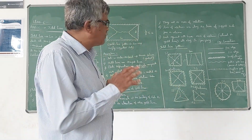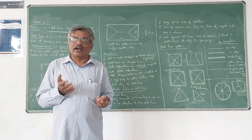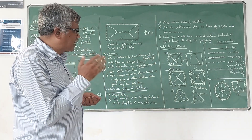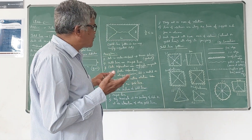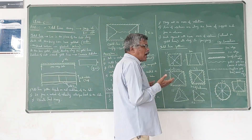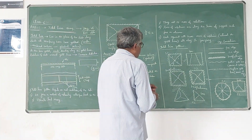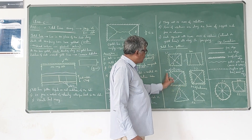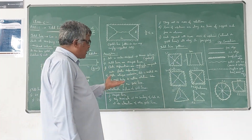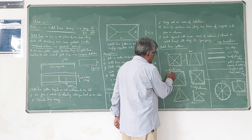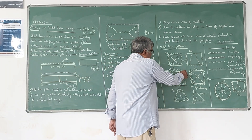These yield line patterns have been obtained from experiments — by casting slabs, applying loads, and observing the failure or cracking pattern at collapse. Those experimental results are used to analyse slabs using theoretical equations. Another example shows all four sides fixed or continuous, where you can observe dotted lines (negative yield lines) along the edges and positive yield lines at mid span.